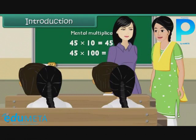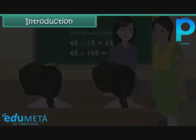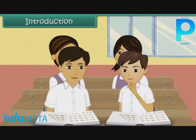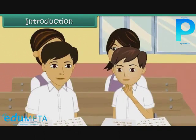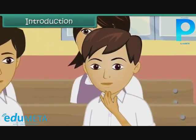She asks Priya the strength of her class. 35, replies Miss Priya. Miss Amita performs a quick mental calculation and says, there are 180 students in the other five sections of class 3. If this section is included, the total strength of class 3 is 215. Miss Amita is long gone, but Arun is still wondering how she managed to compute so fast.